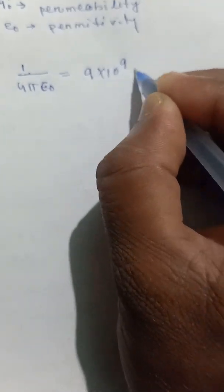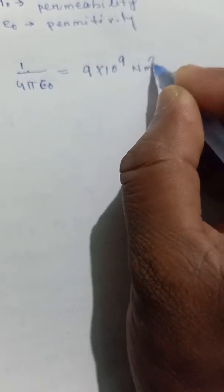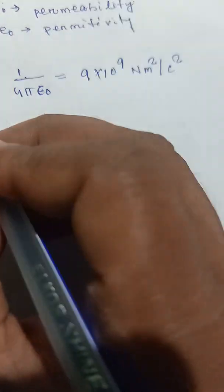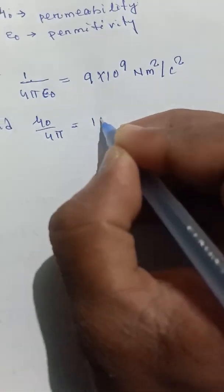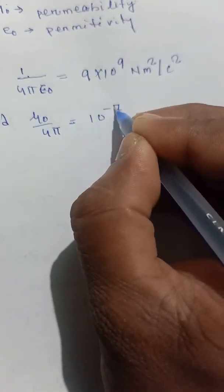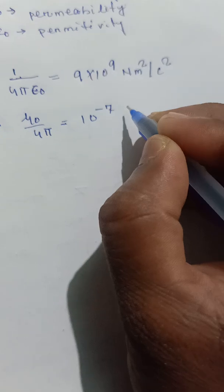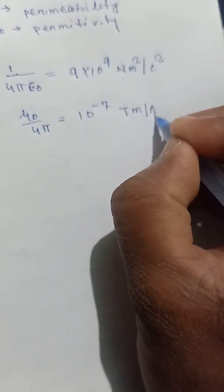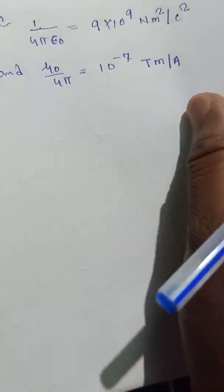We know that 1 by 4πε₀ equals 9×10⁹ Newton meter square per Coulomb square — this is Equation 1. And μ₀ by 4π is equal to 10⁻⁷ Tesla meter per Ampere — this is Equation 2.